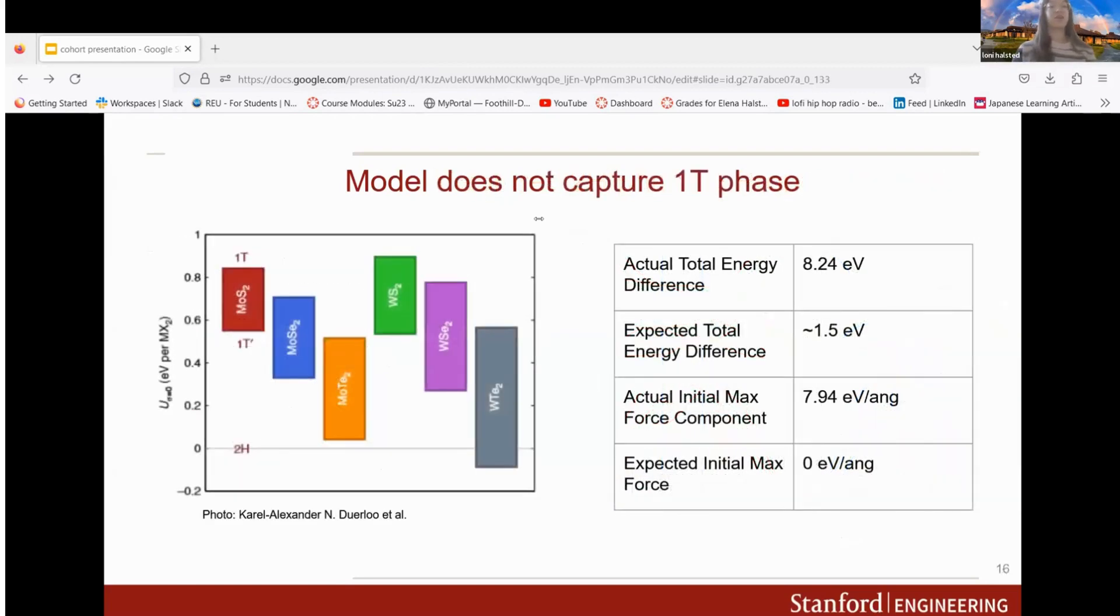We wanted to see how far we can push our model, testing it beyond the scope of our dataset. Looking at the red block for MOS2, we should see about a 0.8 to 0.6 energy difference for the phase transition. For two units we should expect to see about 1.5, however with our model we got 8.24, which shows that we definitely did not capture the 1T phase.